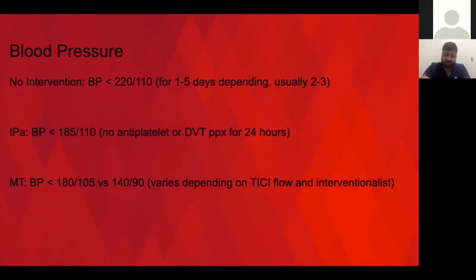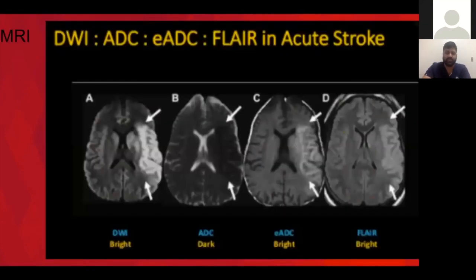For blood pressure goals: if there's no intervention like TPA or thrombectomy, keep BP up to 220 to hyperperfuse the brain. If there's TPA, keep less than 185. If there's thrombectomy with good reperfusion, we target less than 140; if no good reperfusion, we liberalize it quite a bit. On MRI, stroke appears as diffusion restriction — hyperdensity on DWI with correlating hypodensity on the ADC map. The ADC map stays dark for about seven days, and it takes about 12 hours for the FLAIR signal abnormality to appear.